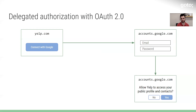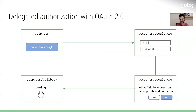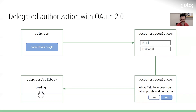If the user clicks no, then we can just go home — there's nothing else to talk about. But if the user clicks yes, the browser gets redirected back over to the original application, Yelp in our case. Some magic happens behind the scenes, and Yelp then gets a special access token — a special string that allows them to go talk to whatever API they were trying to reach originally, like getting contacts. Now they actually have permission to do that, because they have this special token.